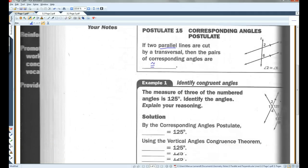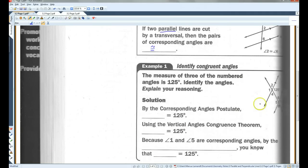And she just crossed the line. Okay, so for example, I apologize, this is kind of fuzzy. The measure of three of the numbered angles is 125 degrees. Identify the angles, explain your reasoning.